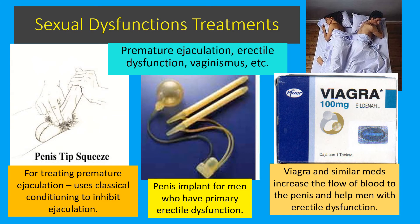Another sexual dysfunction is vaginismus, in which a woman who has been sexually assaulted experiences muscle tightening around the vagina through classical conditioning whenever she becomes sexually aroused, making intercourse very painful. This is treated through systematic desensitization — exposure therapy — by very gradually and carefully working toward relaxation. It's important to be relaxed during sex, because nervousness in either men or women interferes with sexual performance. The point is: there are good treatments for sexual dysfunction.